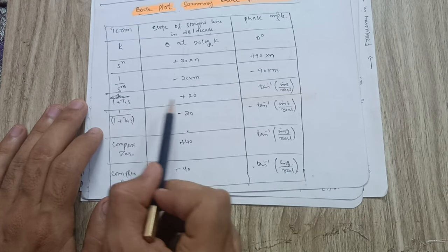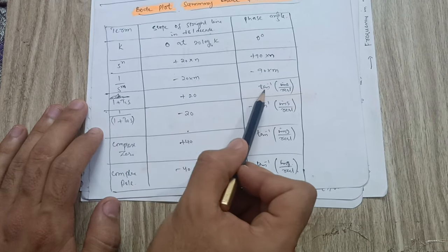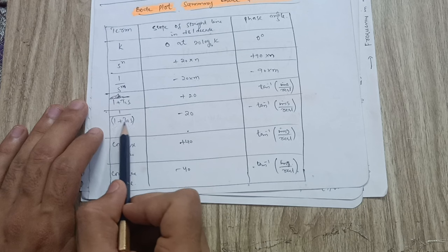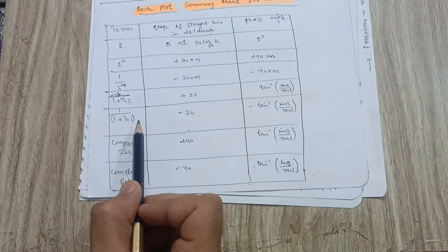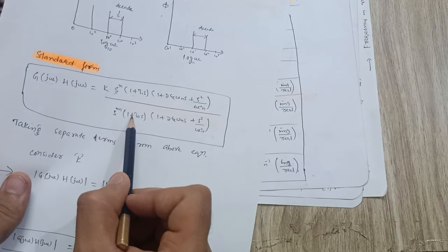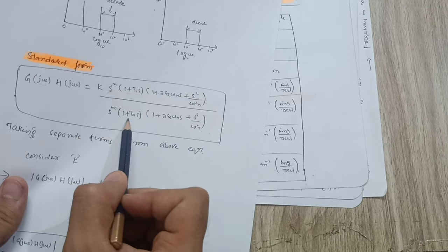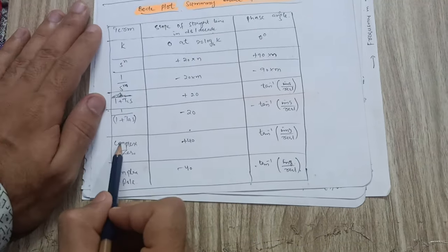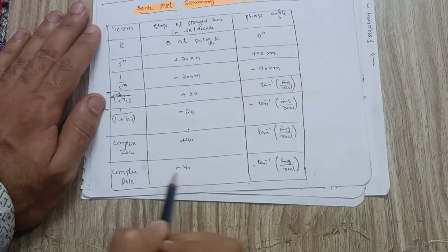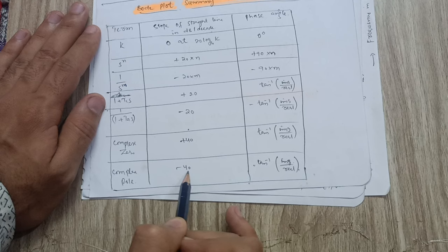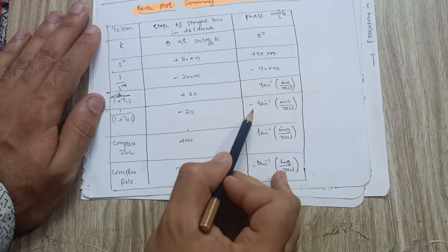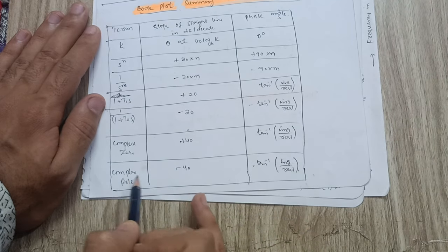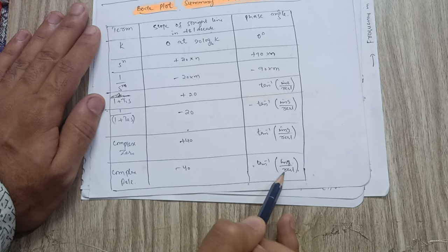For a simple zero (1 + T₁s), the slope magnitude is +20 dB/decade and the phase angle is tan⁻¹(imaginary/real). For a simple pole (1/(1 + Ts)), the slope is −20 dB/decade. For a complex zero the magnitude contribution is +40 dB/decade and for a complex pole it is −40 dB/decade, with respective phase angles of ±tan⁻¹(imaginary/real). Remember this summary chart to solve problems.